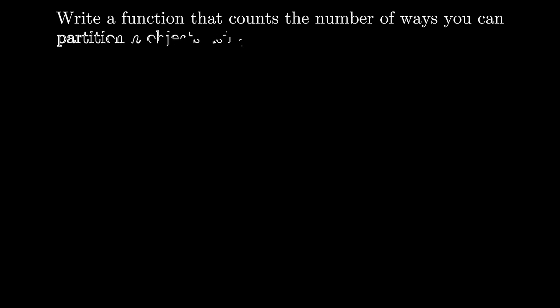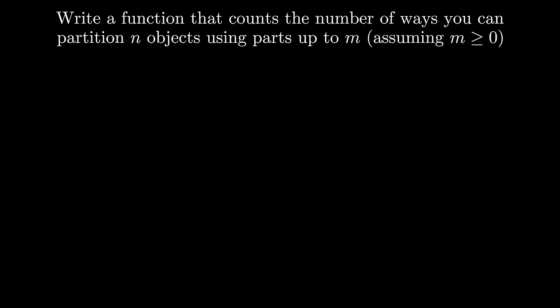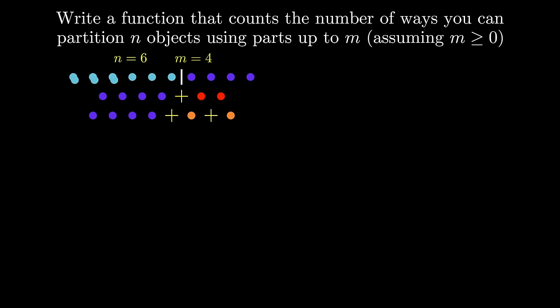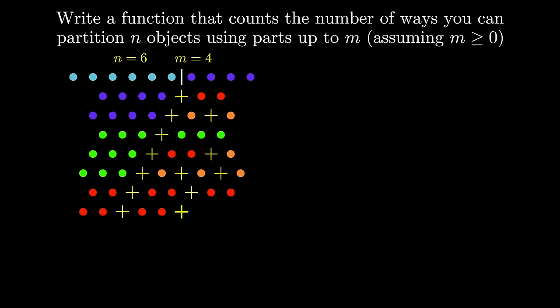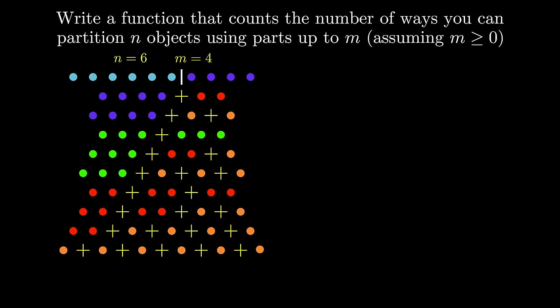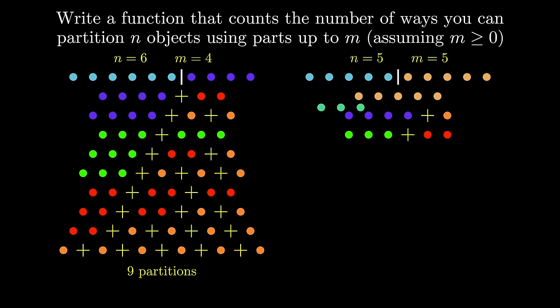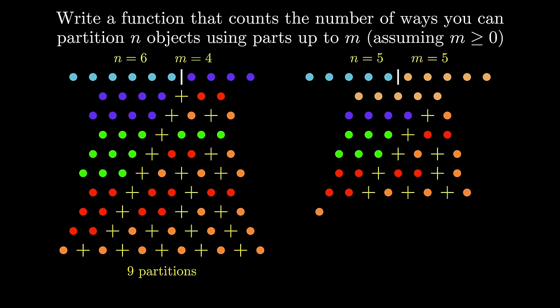Let's take a look at a really challenging problem. Write a function that counts the number of ways you can partition n objects using parts up to m. Let's take a look at some examples to get a sense of what this problem is even asking. For n equals 6 and m equals 4, we end up with a total of 9 unique partitions. Let's take a look at one more example to make sure we really understand what's going on — here's what the partitions look like for inputs n equals 5 and m equals 5. Here we have 7 unique partitions, and make sure you take a second to really understand why these are the only valid partitions.